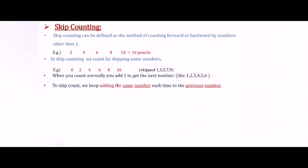When you count normally you add 1 to get the next number. Like 1 plus 1 you will get 2, 2 plus 1 is 3, 3 plus 1 is 4, 4 plus 1 is 5, 5 plus 1 is 6, 6 plus 1 is 7 and so on. To skip count we keep adding the same number each time to the previous number.